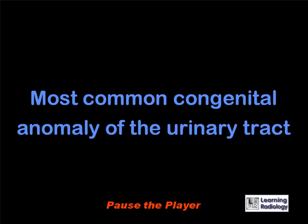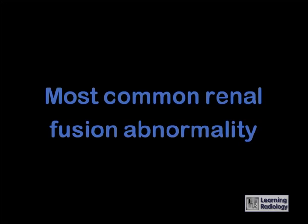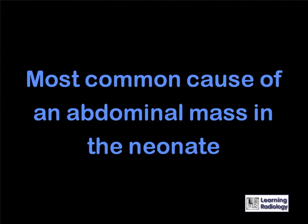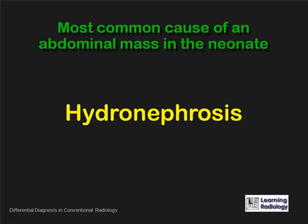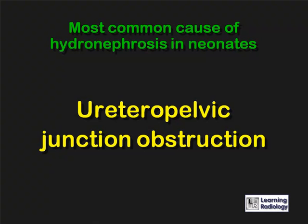What is the most common congenital anomaly of the urinary tract? Ureteropelvic junction obstruction. What is the most common renal fusion abnormality? Horseshoe kidney. What is the most common cause of an abdominal mass in the neonate? Hydronephrosis. What is the most common cause of hydronephrosis in neonates? Ureteropelvic junction obstruction.